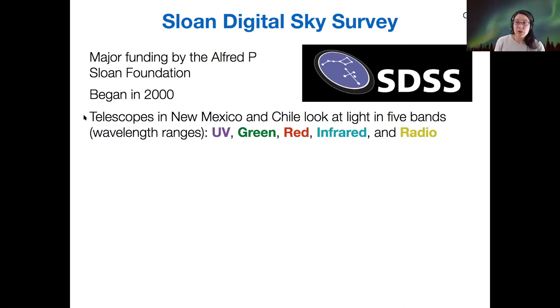The Sloan Digital Sky Survey is the biggest part of this effort. The Alfred P. Sloan Foundation funds them, and they look in five different wavelength bands: UV, green, red, infrared, and radio. We'll come back to these different wavelength bands in the activity on Wednesday.